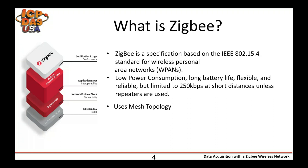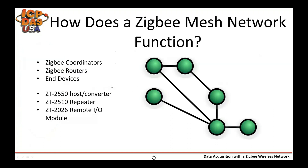ZigBee has most recently found a lot of applications in personal home automation systems, but for our purposes we will be focusing on its industrial applications, particularly in a factory setting. The advantage of a ZigBee network is that each device consumes relatively little power. The trade-off is that data transfer is limited to 250 kilobytes per second. ZigBee signals are also limited to 100 meters line of sight unless you're using a repeater or a higher-powered transmitter. Some of our modules, the ZT-2060 for instance, offer a higher transmission range.